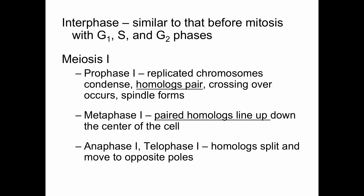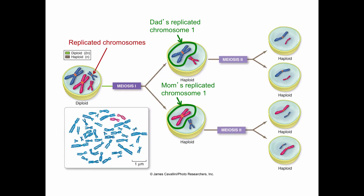In prophase one of meiosis one, the replicated chromosomes condense — just like prophase of mitosis — but the homologous chromosomes are going to find one another. These are your homologous pairs; they carry the same information. One would be from your mother and one from your father. Because they're the same size and shape, they pair up.